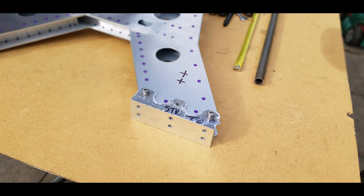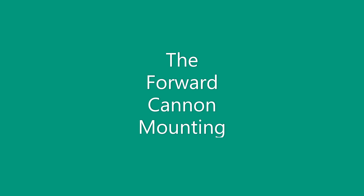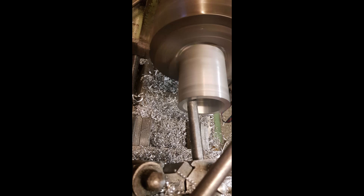The forward cannon mounting. Economies of scale prevent the project from using some of the original manufacturing methods. While the form and function will remain true to the original, some of the large castings will be replicated by machining from billet stock and by using welding fabrication techniques. The following images give a snapshot of some of the manufacturing methods and techniques used to produce the forward cannon mount.